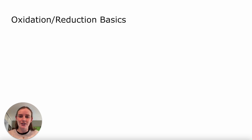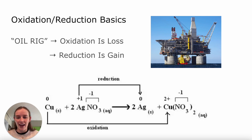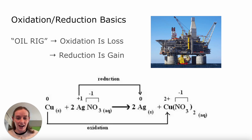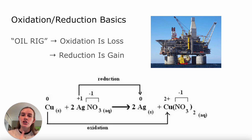First we want to cover some oxidation and reduction basics. The most important, of course, is our lovely acronym OILRIG — oxidation is loss and reduction is gain of electrons. In our reaction expression, we have copper, which is being oxidized, and silver, which is being reduced. Copper's oxidation number is going from zero to plus two, meaning it has lost electrons, while silver has gone from plus one to zero, meaning it has gained that negative charge associated with an electron.